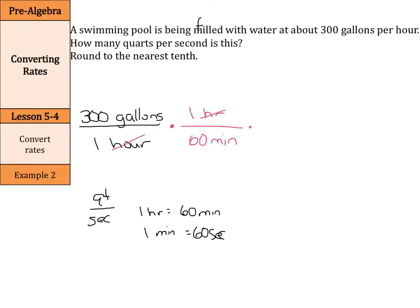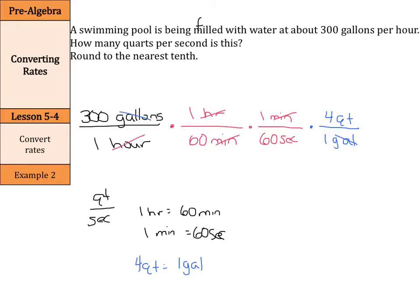Now I need to get my minutes into seconds, so this is going to be 1 minute over 60 seconds, and my minutes cancel. Now I've taken this to the seconds that I need. But what about getting my gallons to quarts? Well, I know that 4 quarts equals 1 gallon. So if I'm looking to cancel out my gallons, I write gallons on the bottom so it cancels, and I'm left with 4 quarts. And now I have my quarts and my seconds.